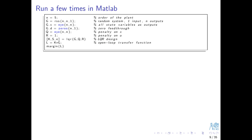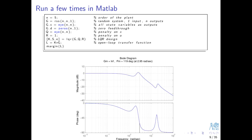You may want to run the following code a few times in MATLAB. It generates a random system, designs an LQ-optimal state feedback regulator, and plots the Bode plots — that is, the open-loop magnitude and phase plots — while also computing the gain and phase margins.